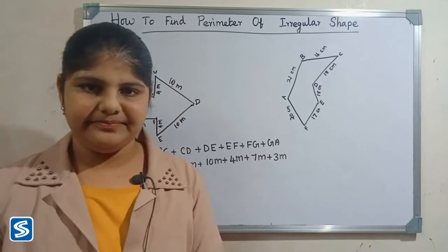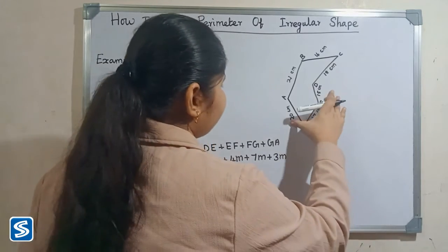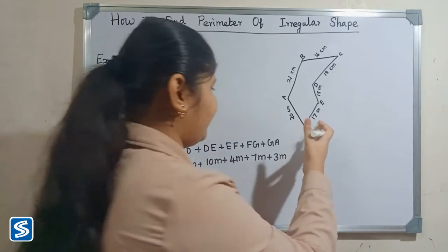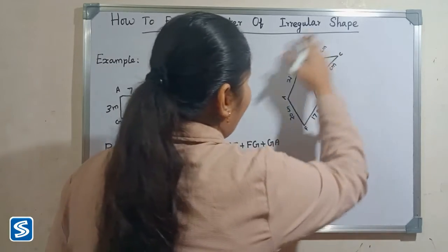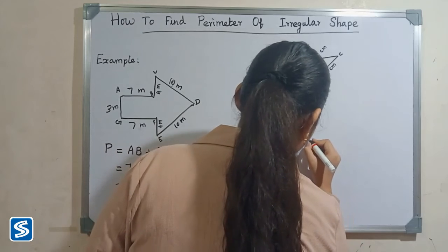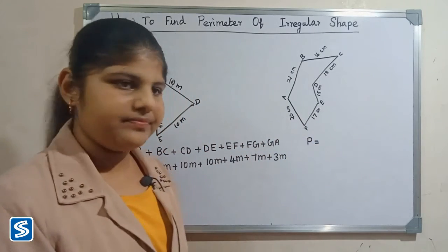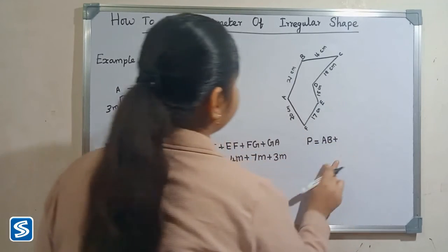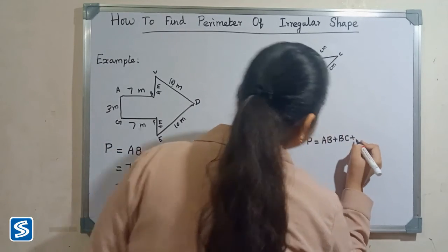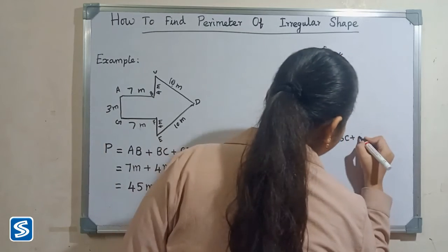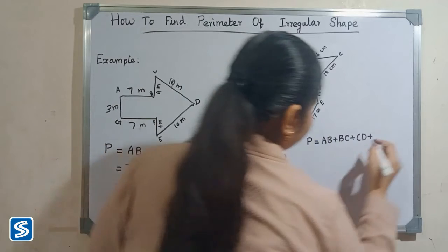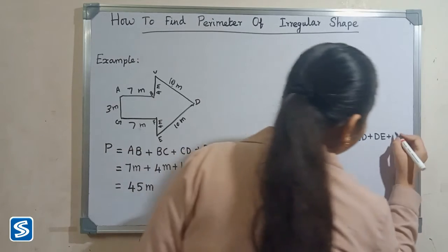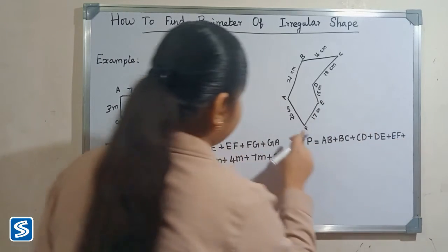Next we will take one more example. Now we have to find the perimeter of this irregular shape. To find the perimeter, we just have to add the length of all the sides. Here the sides are AB plus BC plus CD plus DE plus EF plus FA.